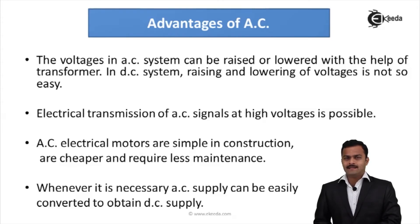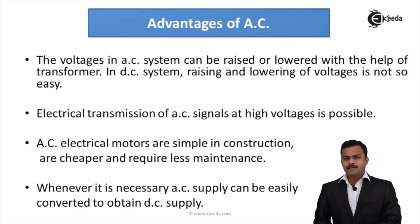Last, whenever we need a DC supply, we can get it from AC supply by using a rectifier. A rectifier is a device we use everywhere nowadays which can convert AC supply to DC supply. So if we can get DC supply out of AC supply, the standalone requirement for DC supply for most applications is greatly reduced.